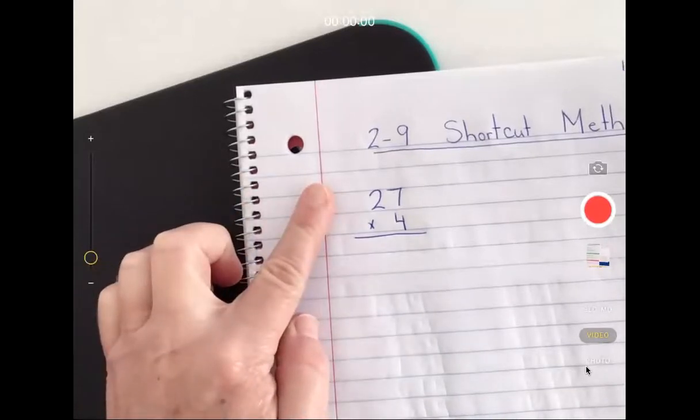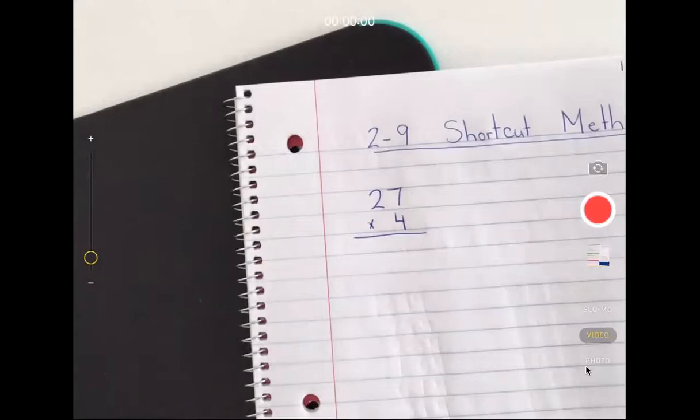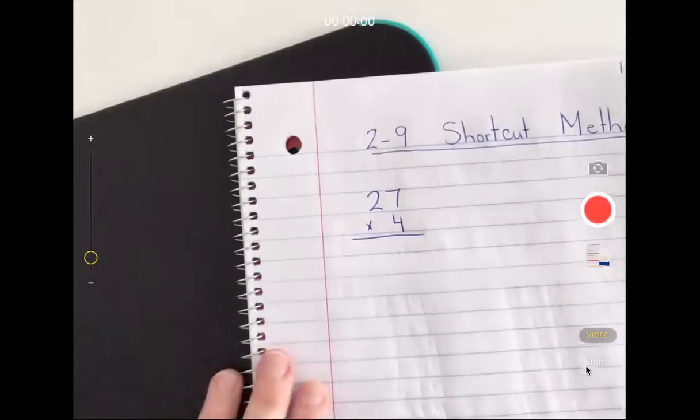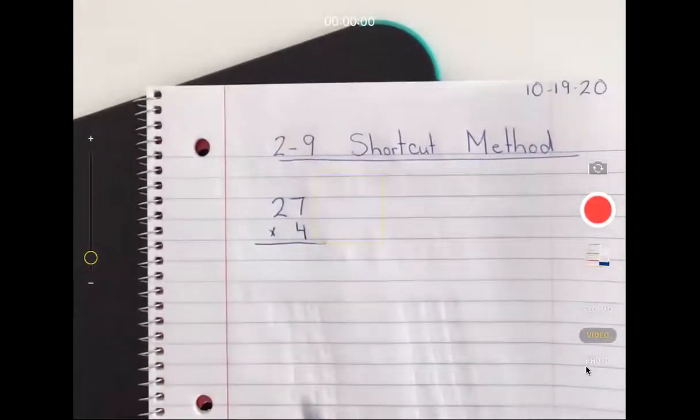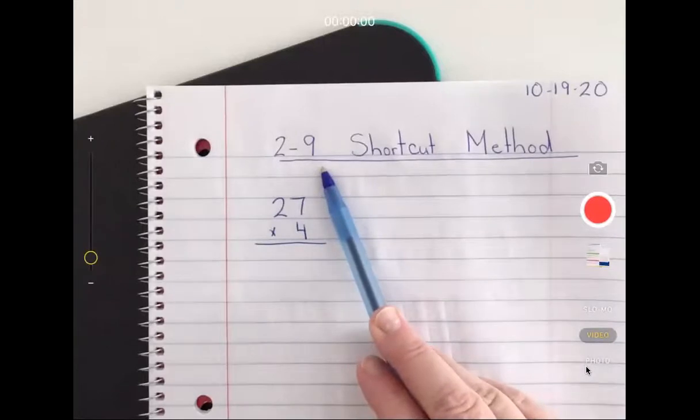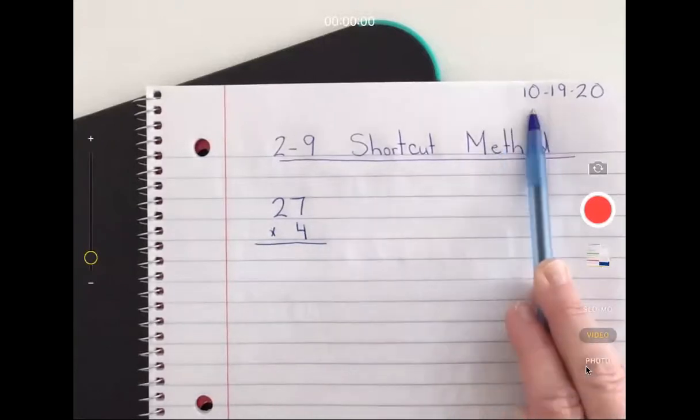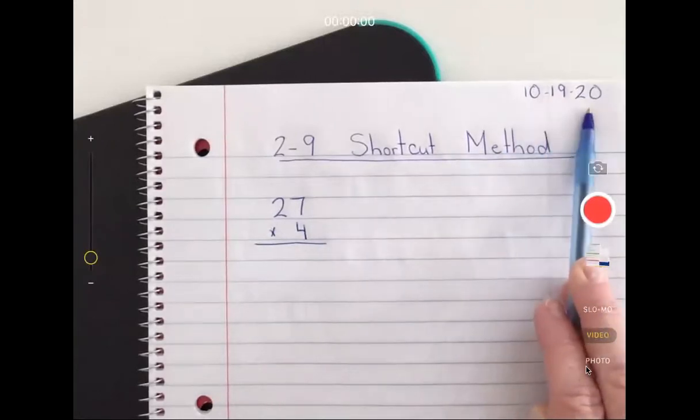You are welcome to be in your spiral math notebooks, you can do this with me, you could do it on your dry erase board to get the hang of it, or you can watch me. If you're in your spiral and want to label it, this is 2-9 shortcut method, today's date is 10-19-20.